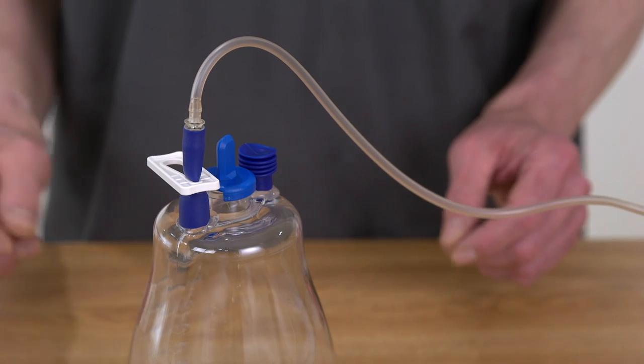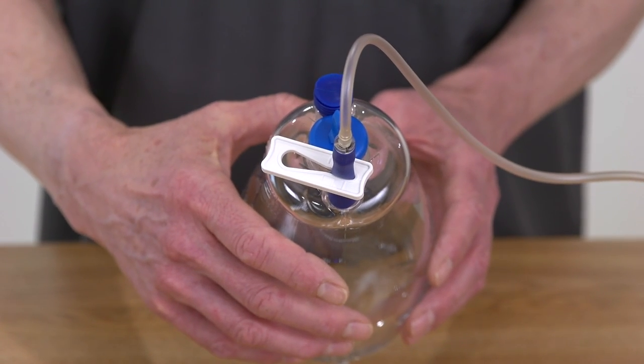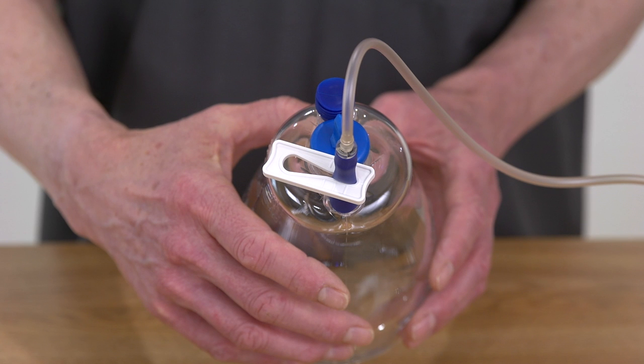Take a moment to examine the drainage bottle. The bottle comes pre-evacuated. The white slide clamp on the top of the bottle should be in the closed position, pinching the tubing to prevent any loss of vacuum from the bottle.